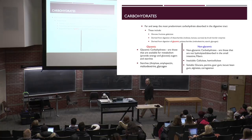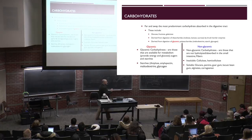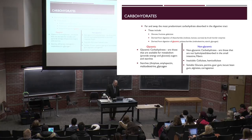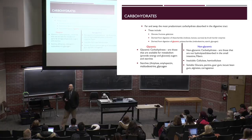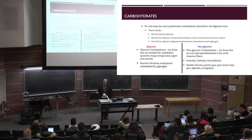Short-chain fatty acids can be used by the epithelial cells as an energy source or be absorbed and transferred to the liver. Glycemic carbohydrates — things like starches, amylose, amylopectin, maltodextrins, and glycogen — actually increase the amount of sugar in our blood. Non-glycemic polysaccharides like alginates and pectin are not broken down in the upper GI to glucose; they're fermented in the large intestine by gut microflora to form short-chain fatty acids and other metabolites. These are really useful for structuring.